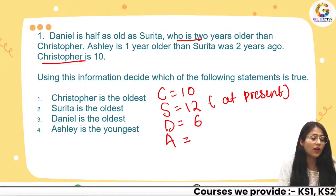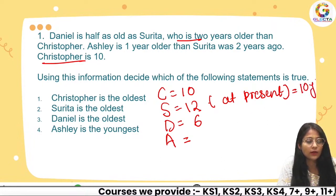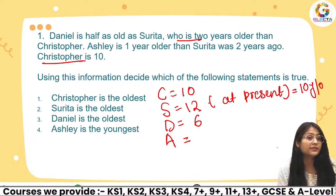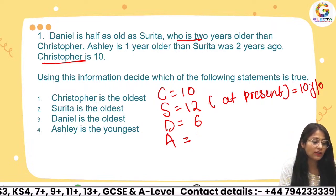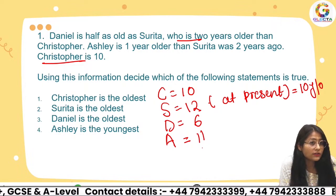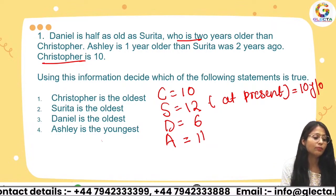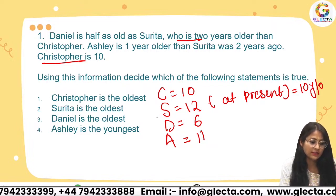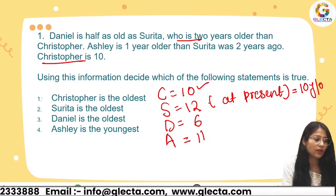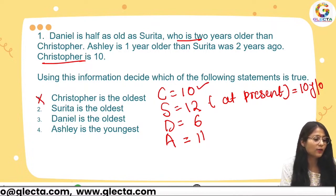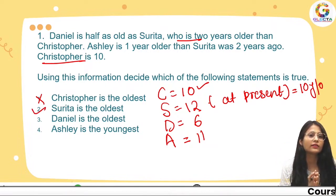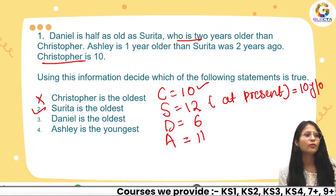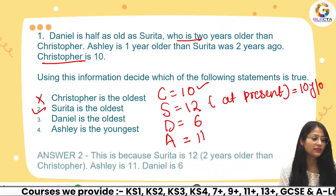Sarita is 12 at present, so two years ago she was 10. If Sarita was 10 two years ago, Ashley would be 11, as she is one year older than Sarita. Based on that, Christopher's age of 10 means option one is incorrect. The correct answer is option B — Sarita is the oldest. Well done to those who got it right.